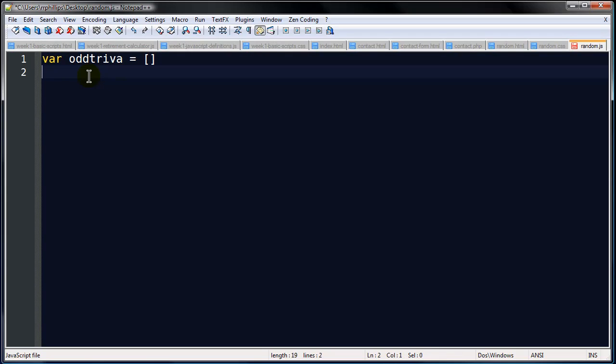Now after I do that I'm going to create a string of array items. For instance the first one is going to be oddtrivia[0] equals 'A pregnant goldfish is called a twit.' There we go. So this is the first item in my oddtrivia array. And I'm going to pause my recording and type out a few more. So I've got about ten here. But they're all going to have this same basic format.